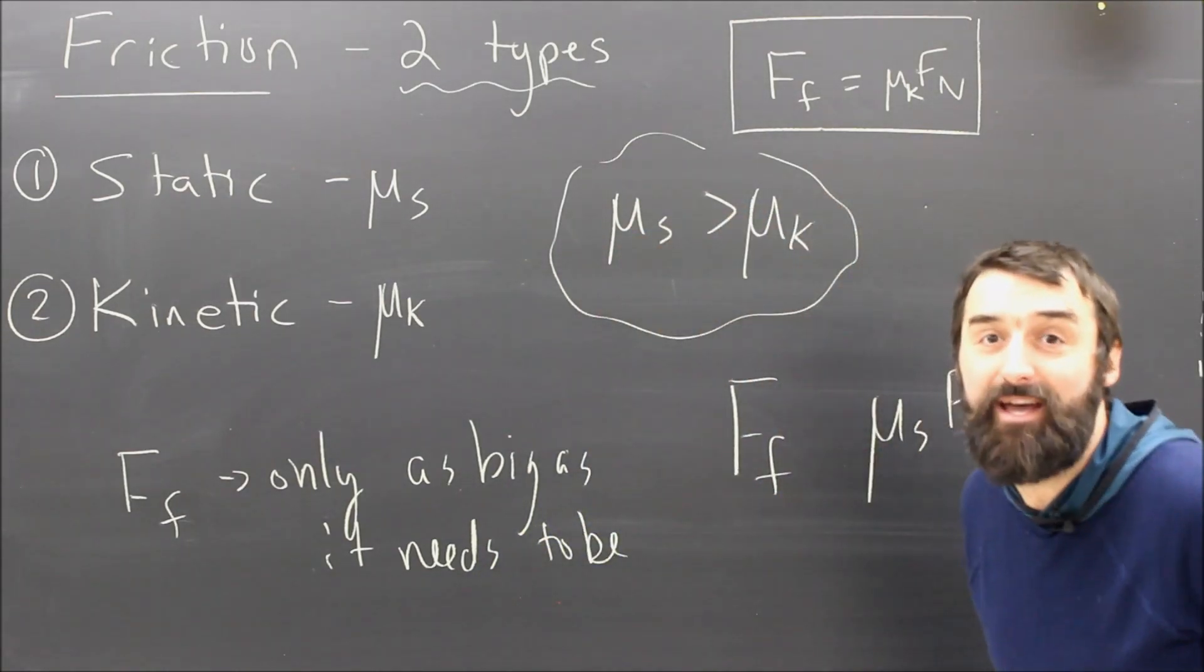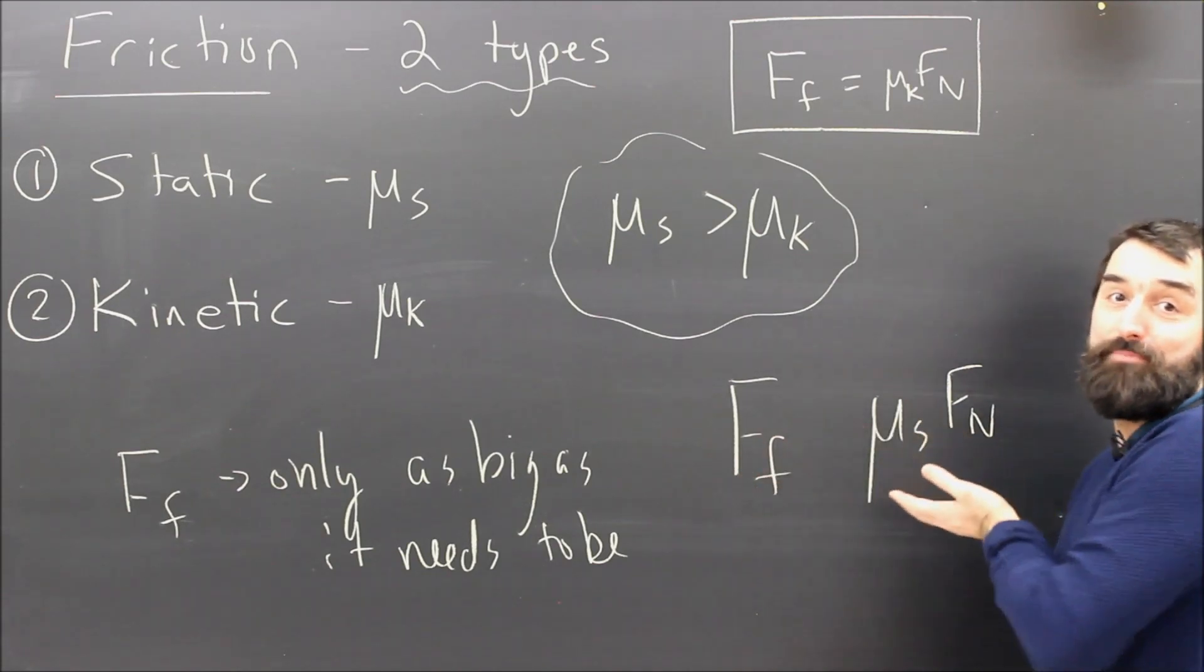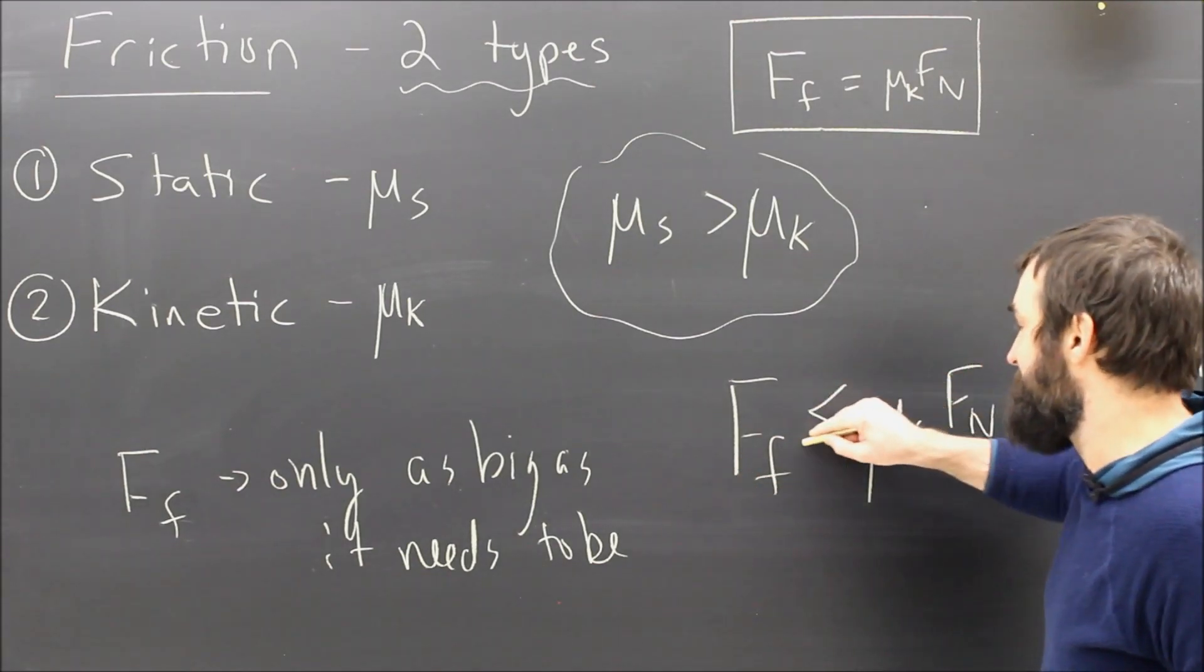I'll calculate 12 because that's the maximum that static friction can do. But if it's not needed, it won't be as big as that. How do we say friction can be as big as that in math? We just say less than or equal.